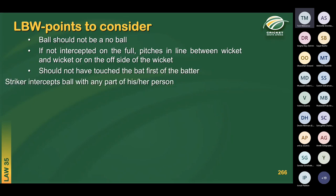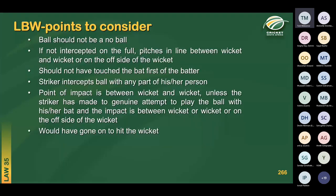Four: if the batsman was making a genuine attempt to play the ball, the point of impact must be between wicket and wicket for LBW to be an option. However, if the batsman has made no genuine attempt to play the ball, the contact must be between wicket and wicket or outside the line of the off stump. Five: but for the interception by the batsman, the ball would have gone on to hit the stumps and dislodge the bails. Refer to Law 36 in the Blue Book.